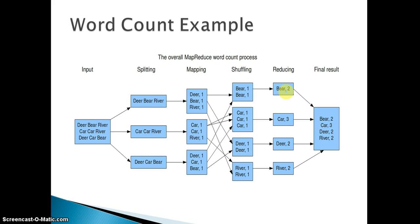Similarly, we have grouped all the keys — the key car and summed up all the values which would be three, meaning car comma three. Similarly we have deer comma one and deer comma one, so we group based on deer and get the final value deer comma two. Similarly we have river comma two as my reducer output. The reducer output would finally be the concatenated result of all these things. A single output or multiple outputs can occur depending upon the number of reducers you are launching. So the reducer output would be the final result, which is the sum of the words present in your input file.